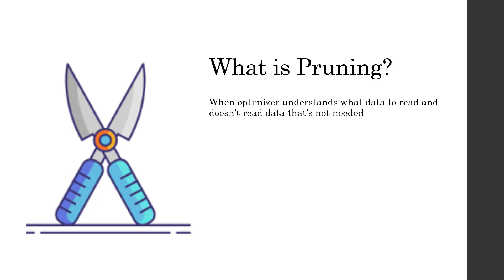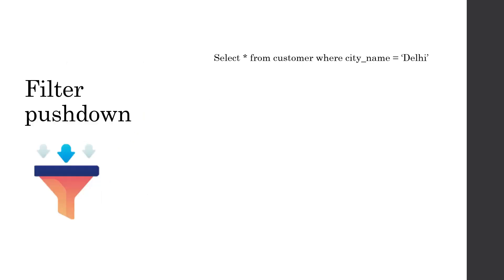Let's start from understanding what is pruning. Pruning is when the optimizer understands what data to read and, more specifically, what data not to read. This is called pruning. Let's understand this in a bit more detail with some examples.